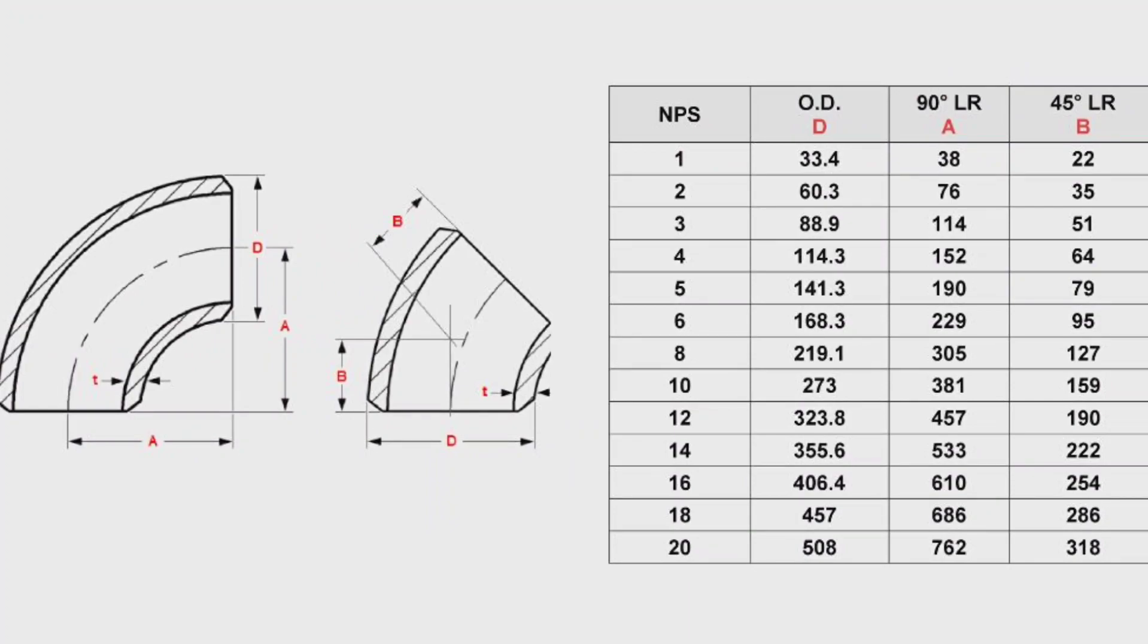Let's look at the dimensions of the elbows with a long radius. The dimensions of the elbows mean the distance from the center of one arm of the elbow to the end of the other arm.